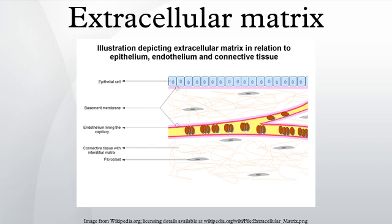Integrins are cell surface proteins that bind cells to ECM structures, such as fibronectin and laminin, and also to integrin proteins on the surface of other cells. Fibronectins bind to ECM macromolecules and facilitate their binding to transmembrane integrins. The attachment of fibronectin to the extracellular domain initiates intracellular signaling pathways as well as association with the cellular cytoskeleton via a set of adapter molecules such as actin.